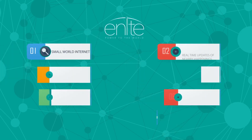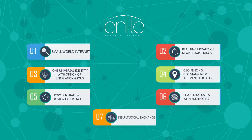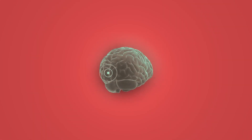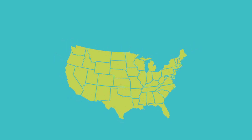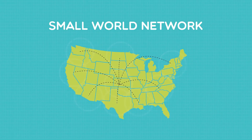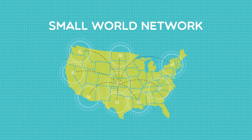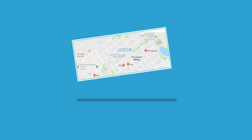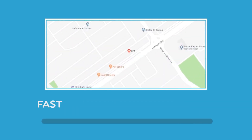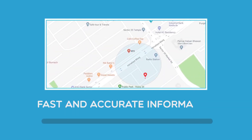Anlite proposes a social internet which is a combination of location-based small world internet with social world. A human brain is a perfect example of an adjustable small world network. A location-based small world network is one of the most advanced networks with futuristic networking capabilities, helping you search, find, or browse fast and accurate information around you.